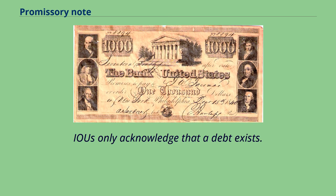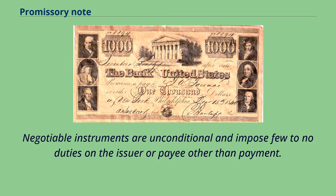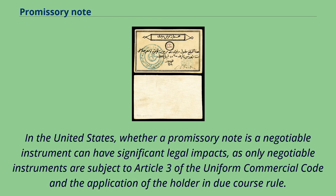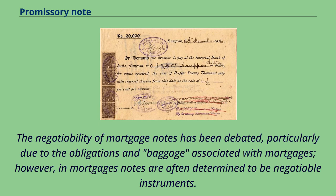IOUs only acknowledge that a debt exists. Negotiable instruments are unconditional and impose few to no duties on the issuer or payee other than payment. In the United States, whether a promissory note is a negotiable instrument can have significant legal impacts, as only negotiable instruments are subject to Article 3 of the Uniform Commercial Code and the application of the holder in due course rule. The negotiability of mortgage notes has been debated, particularly due to the obligations and baggage associated with mortgages; however, mortgage notes are often determined to be negotiable instruments.